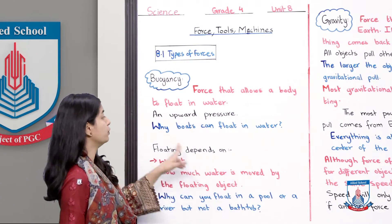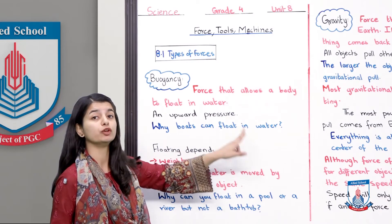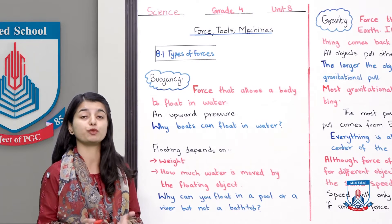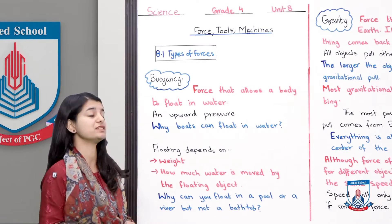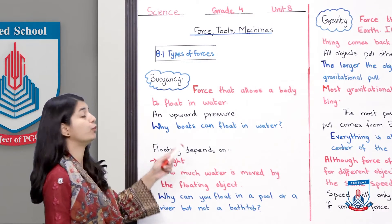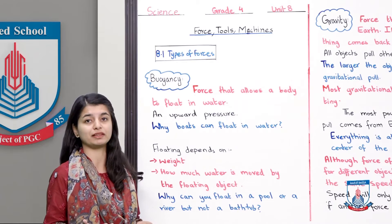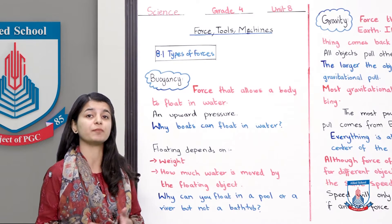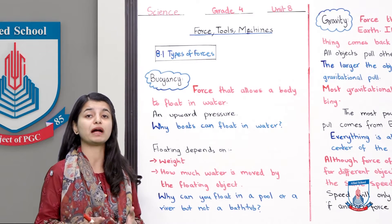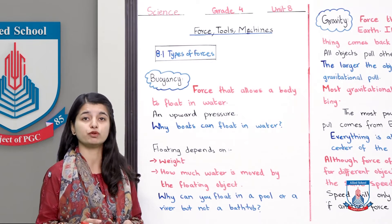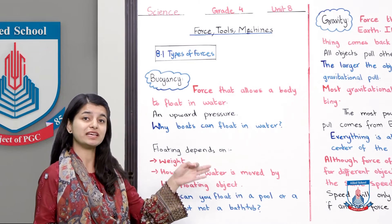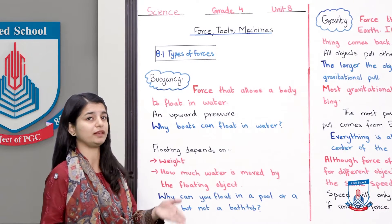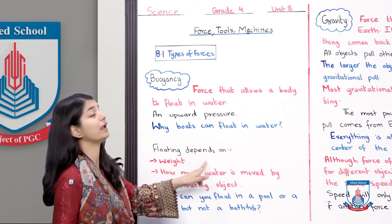Buoyancy is an upward pressure — that's why boats can float in water. Buoyancy is an upward pressure which acts on a body in water. Why do boats float in water? The simple answer is that they experience buoyancy. Because they move in water, they already have an upward pressure or force acting on them, so they float in water.